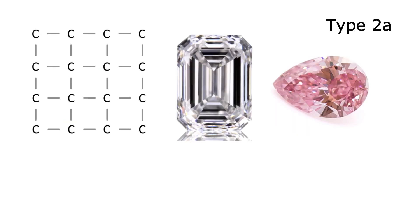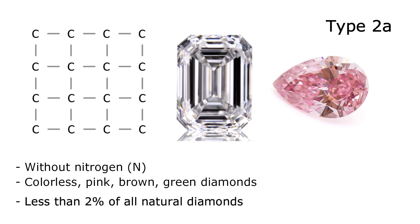Type 2a contains no nitrogen at all. They are colorless, pink, brown or green diamonds. Less than 2% of all natural diamonds are of type 2a.